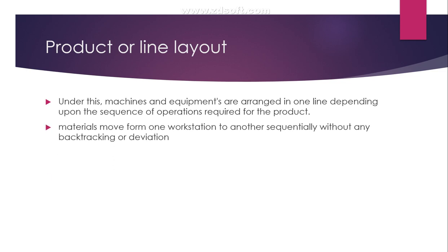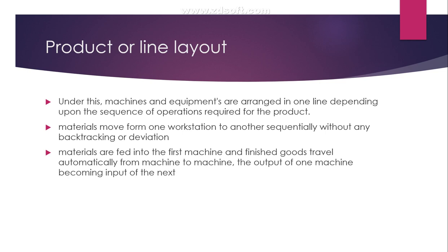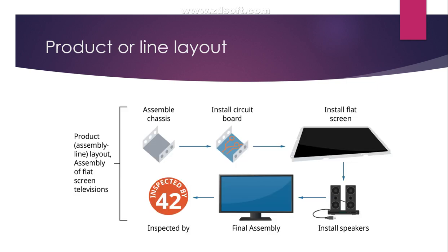The machines and materials move from one workstation to another sequentially without any backtracking or any deviations. It is a predetermined sequence in terms of material movements from one workstation to another. Materials are fed into the first machine and finished goods travel automatically from machine to machine, with the output of one machine becoming the input to the next machine.